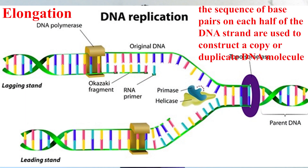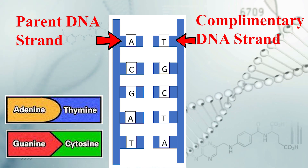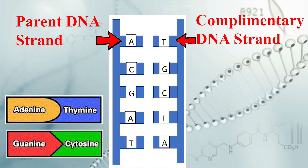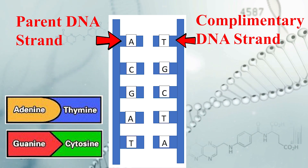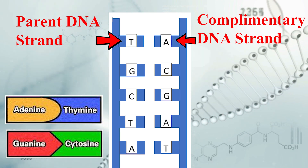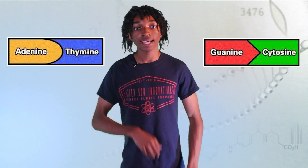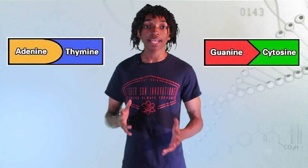During elongation, the sequence of base pairs on each half of the DNA strands are used to construct, copy, or duplicate DNA molecules. An enzyme called DNA polymerase uses materials in the cytoplasm to make new nucleotides that are complementary to the original parent DNA strands. For example, a complementary strand of nucleotides is made for the parent DNA strand ACGAT — the complementary strand is TGCTA. For the other parent DNA strand TGCTA, a complementary strand is made, which is ACGAT. Notice that they follow the base pairing rules: adenine goes with thymine and cytosine goes with guanine.